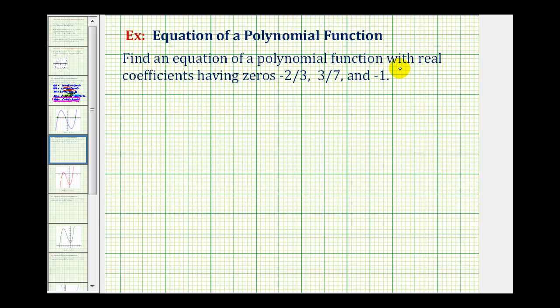We want to find an equation of a polynomial function with real coefficients having zeros negative 2/3, 3/7, and negative 1. Remember, having these zeros of the polynomial function gives us information about the factors of the polynomial functions.